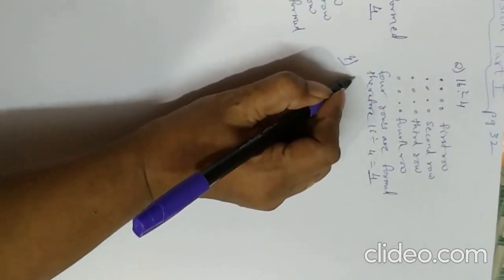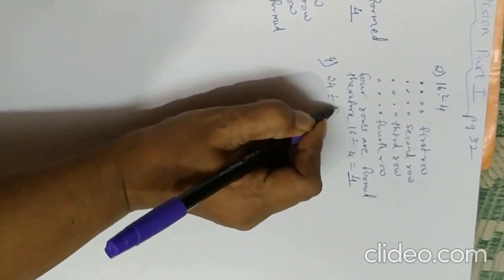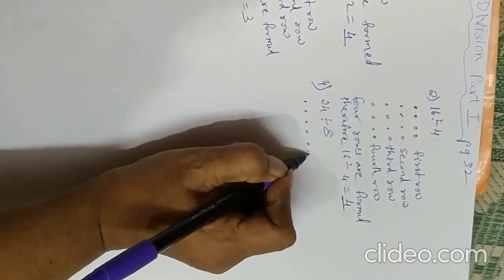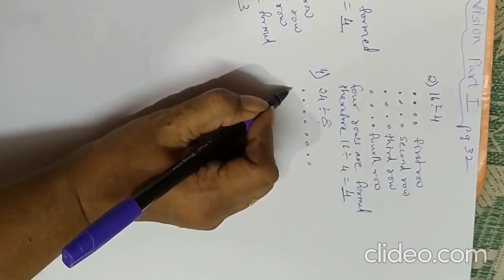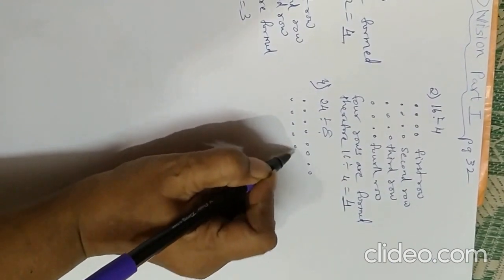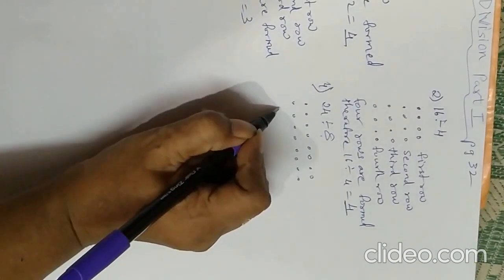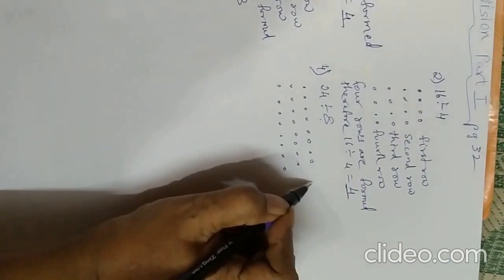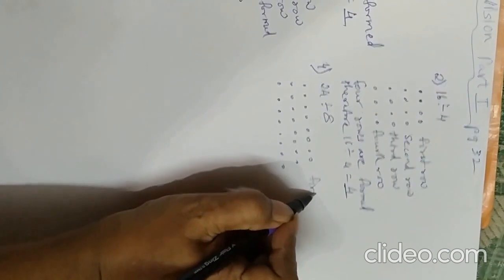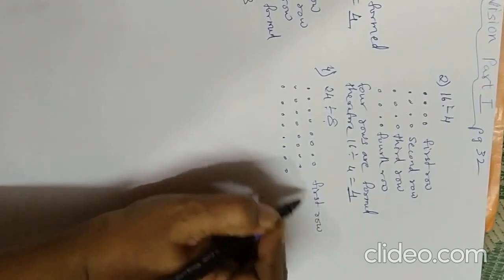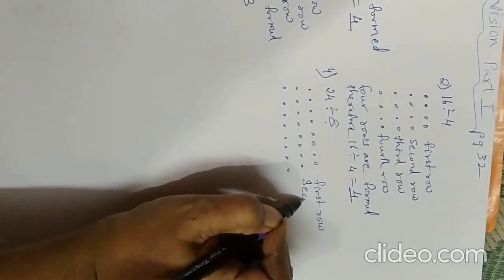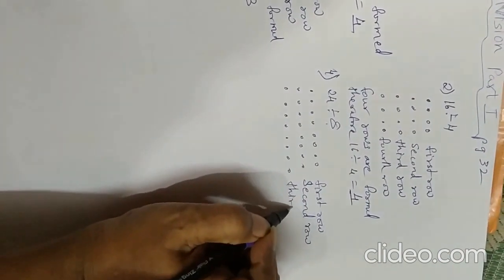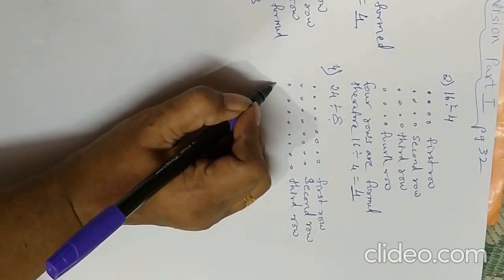The fourth sum is 24 divided by 8. So we have to make groups of 8: 1, 2, 3, 4, 5, 6, 7, 8, 9, 10, 11, 12, 13, 14, 15, 16, 17, 18, 19, 20, 21, 22, 23, 24. You will see three groups are formed. Write here: first row, second row, and third row.